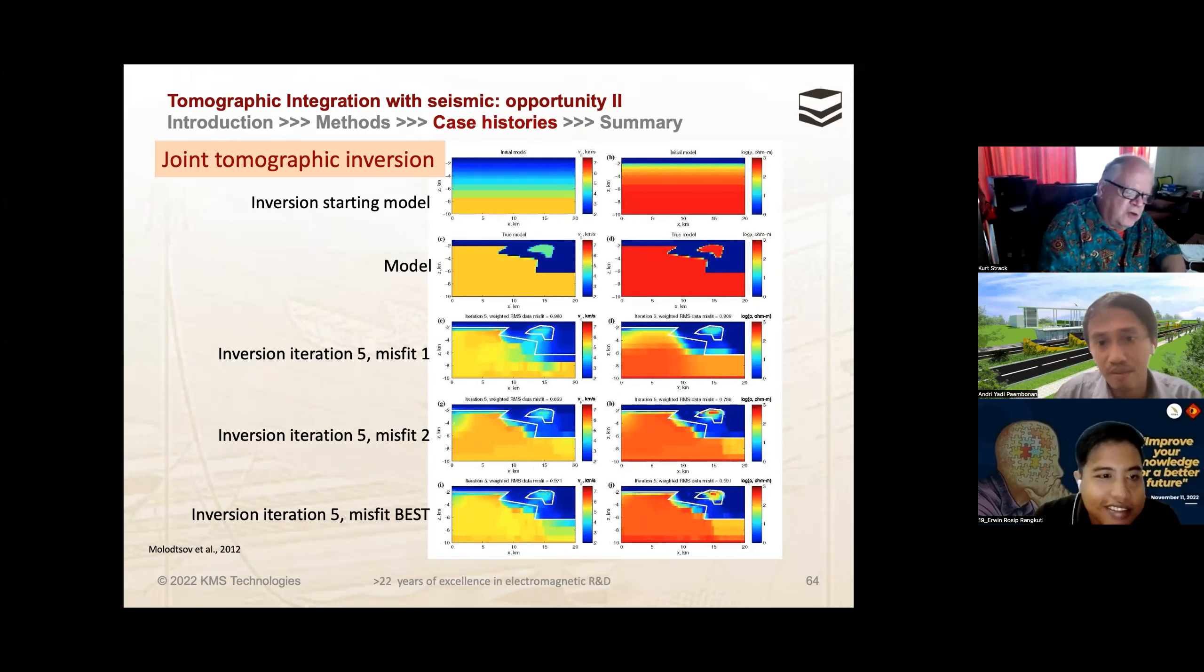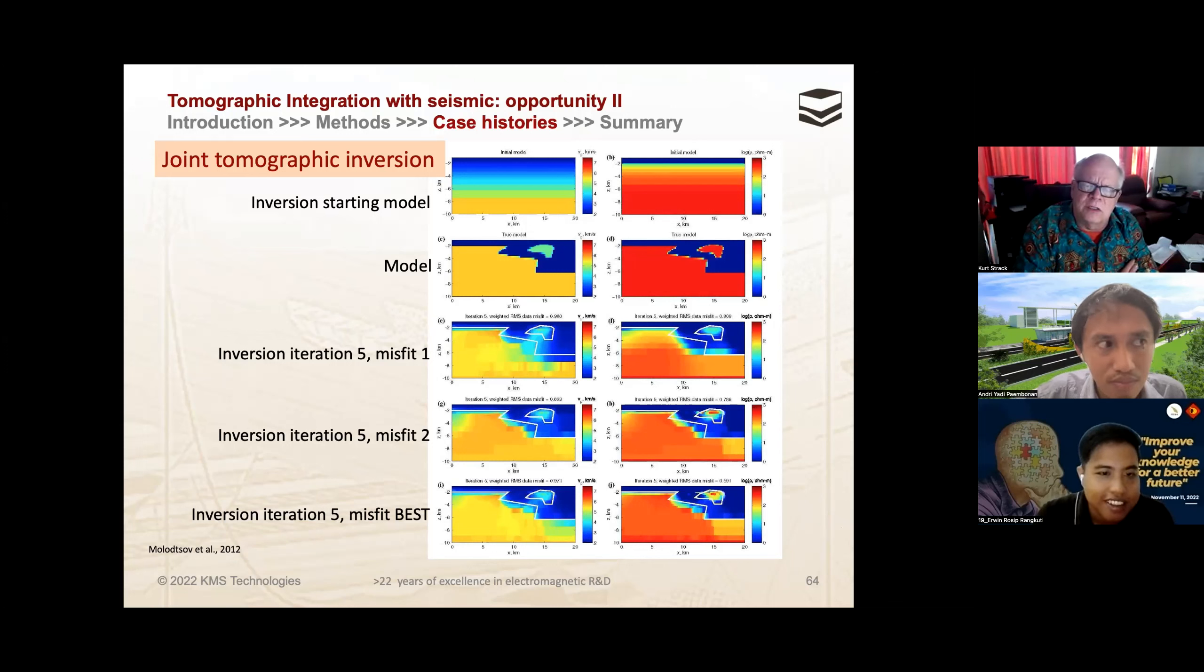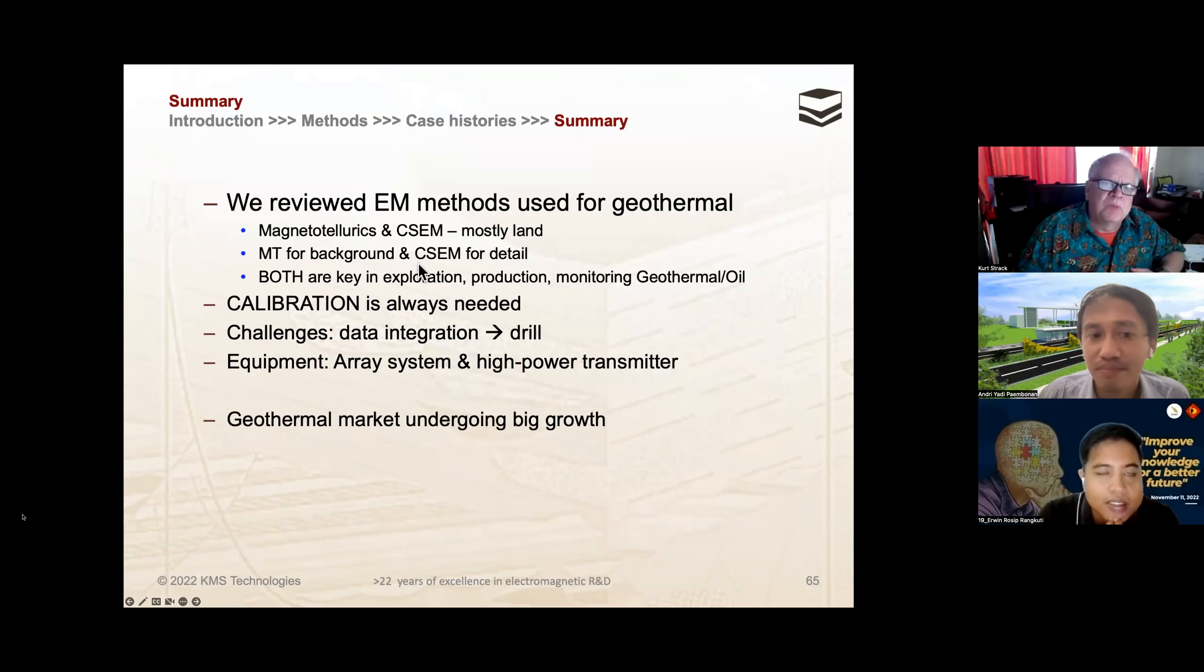Question to Andre: Where do you have in Indonesia an old active volcano? We have in Sumatra in Lampung. For the oldest volcano, you would look for a resistive zone target. For a young volcano, you would look for a conductive zone target.